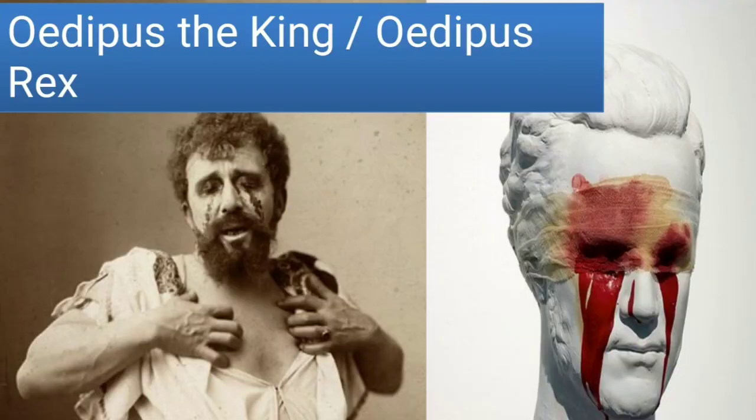This is my second one in the series of work in European classical literature, and the topic is Oedipus Rex, or you can say Oedipus the King, and it is written by Sophocles.